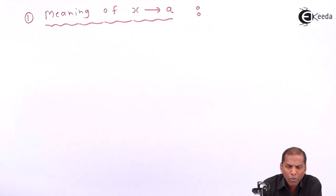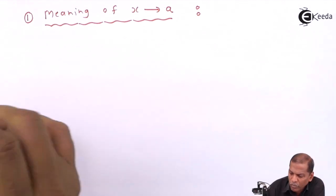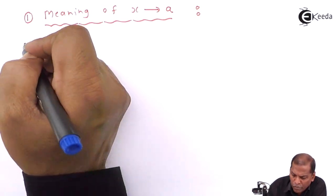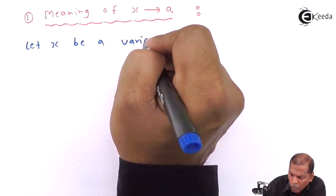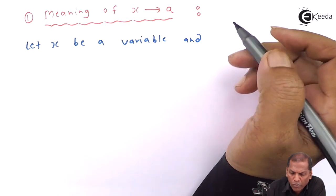Hello friends, now we see the new topic: the meaning of x tends to a, from the chapter on limits. First of all, let x be a variable and a be a constant term.